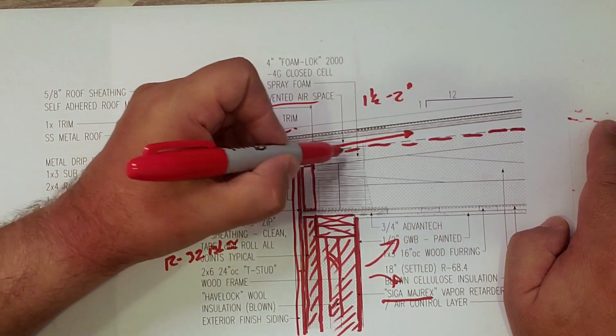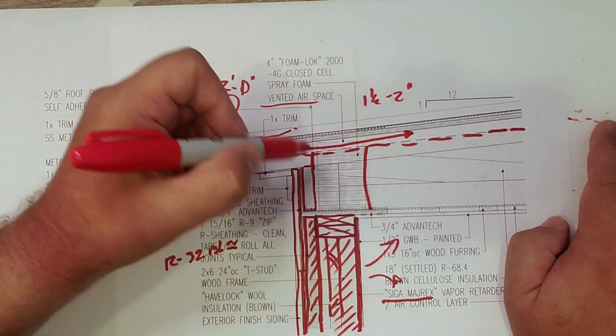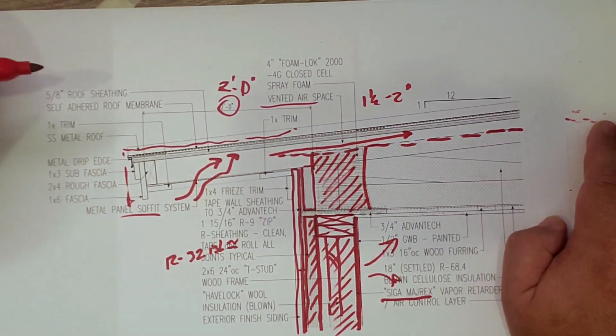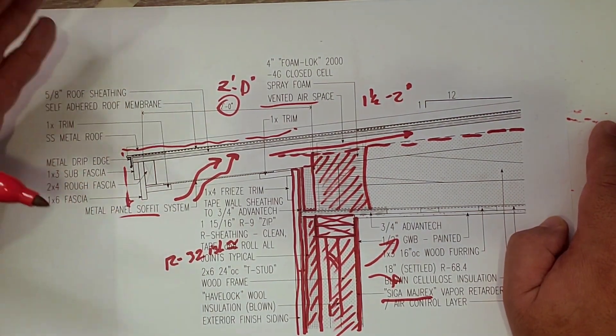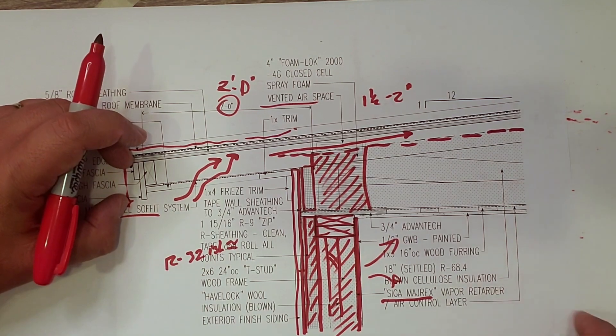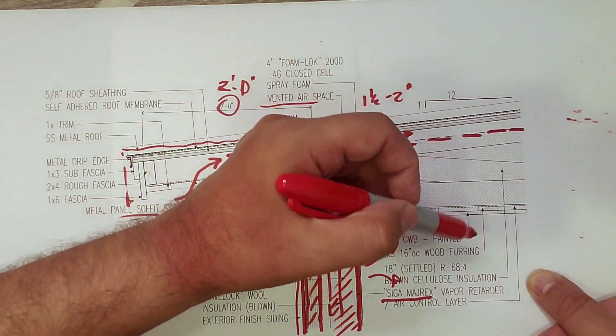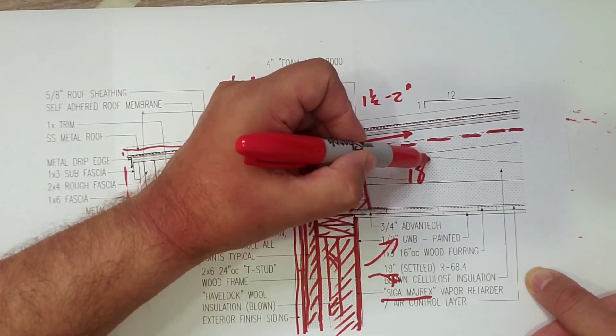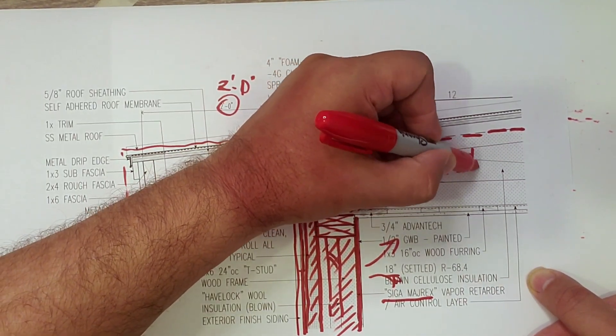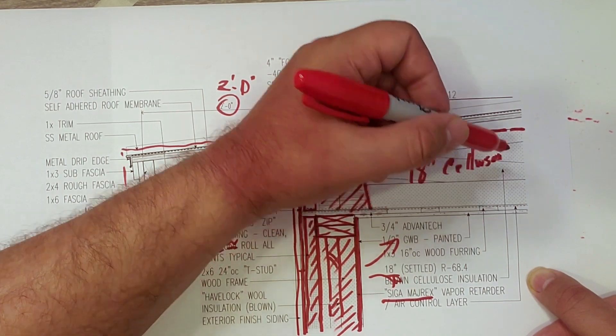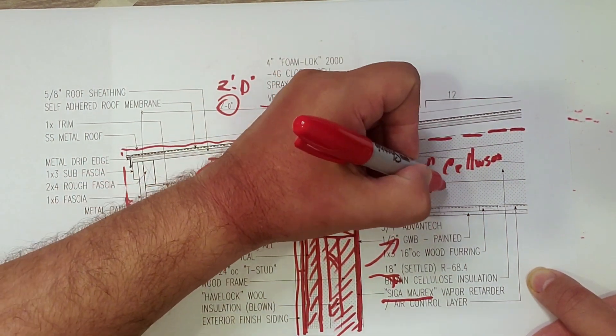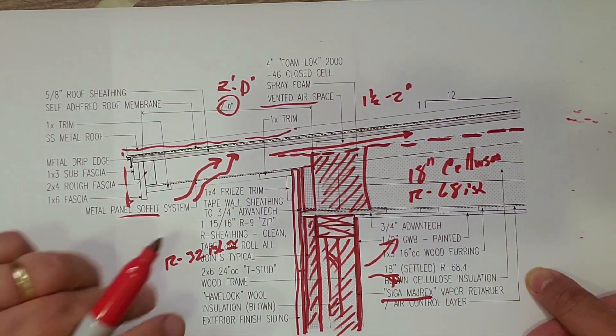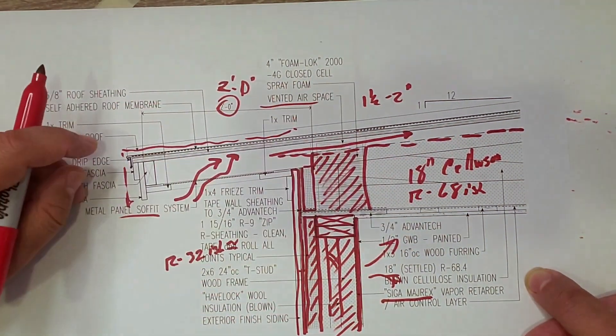In this case here, we netted off the portion above the wall and we blew in or sprayed in some closed cell insulation just at the rim of the roof trusses. And then the rest of this gets filled with 18 inches of cellulose. And that's roughly an R68-ish. So R32-ish in the wall, R68-ish.